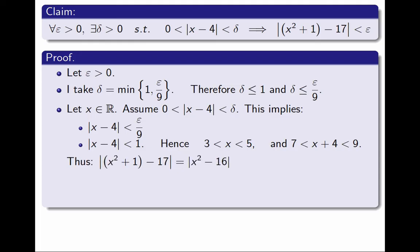And now let's take the expression I care about. The absolute value of x² plus 1 minus 17 is the absolute value of x² minus 16. It factors as the absolute value of x minus 4 and the absolute value of x plus 4. The first term is less than ε over 9, and the second term is less than 9. So the product is at most ε. And that's it! I have proven that the distance between x² plus 1 and 17 is smaller than ε, as needed. So this completes the proof.